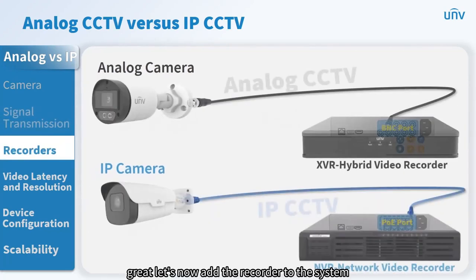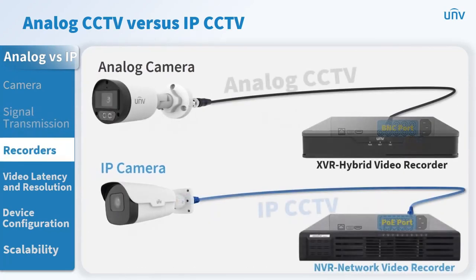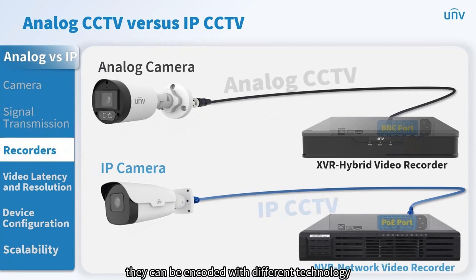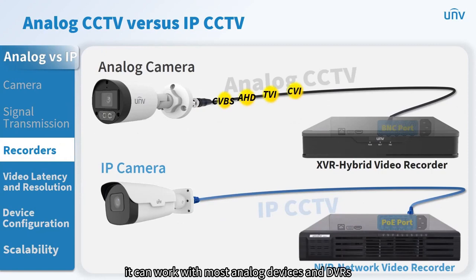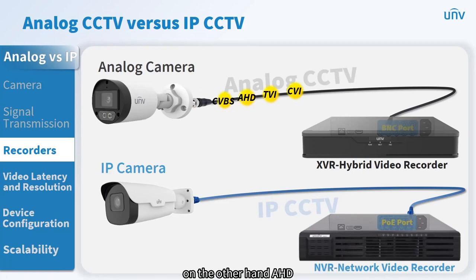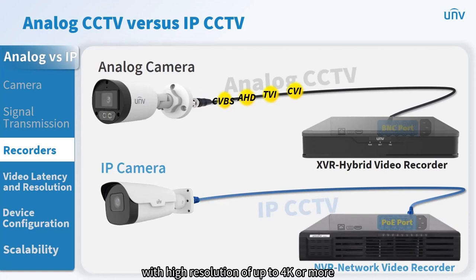When signals come out of the camera, they can be encoded with different technologies. For analog CCTV, the signal can use CBVS, HD-TVI, and CVI. CBVS can work with most analog devices and DVRs. HD-TVI and CVI are more advanced, with high resolution of up to 4K or more, but they don't work with each other.